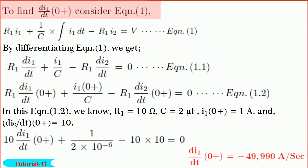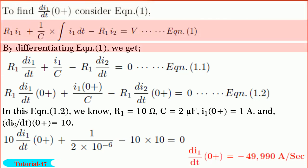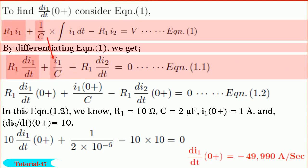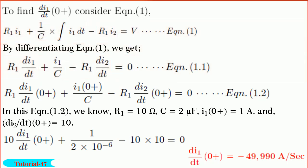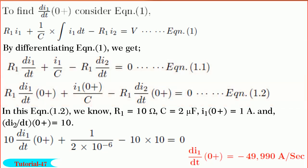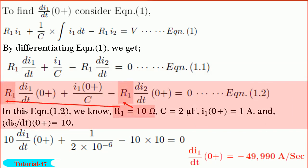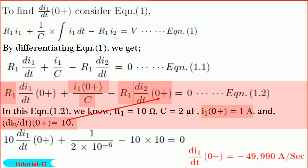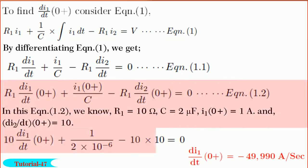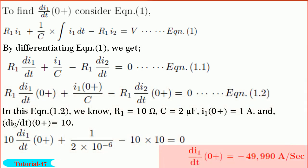Friends, to find dI1/dt(0+), consider equation 1. By differentiating equation 1, we get R1·dI1/dt + I1/C - R1·dI2/dt = 0. Let it be equation 1.1. By substituting for t equal to 0+, we get equation 1.2. In equation 1.2, we know R1 is equal to 10 ohms, C is equal to 2 microfarads, I1(0+) is equal to 1 ampere, and dI2/dt(0+) is equal to 10. By substituting and solving, we get dI1/dt(0+) is equal to -49,990 amperes per second. Hope you have understood it.